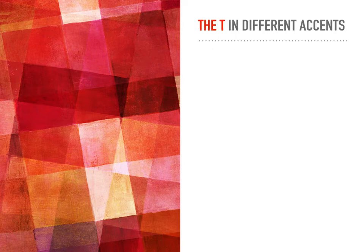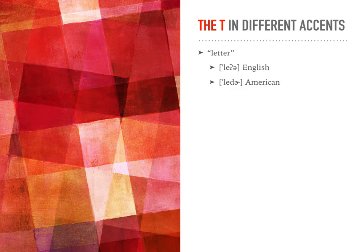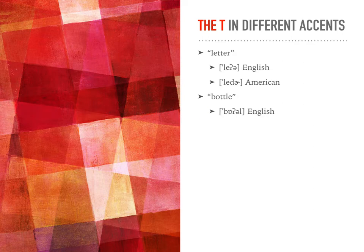This is how the T works in different accents. In American English, at the end of a word, we often use glottal replacement, but in the middle of words it can look different. Take the word 'letter' — in most British accents it's going to be pronounced 'le'ah', and the T is completely replaced by a glottal stop. In American English, though, this changes because the T in the middle of words often becomes a D, so 'letter' in British becomes 'le'ah', and in American it becomes 'ledder'. The same thing happens with 'bottle' — it becomes 'bo'o' in RP or most British accents, and in American it becomes 'boddle'.